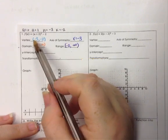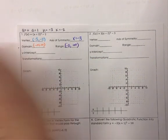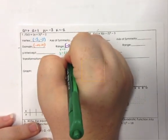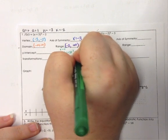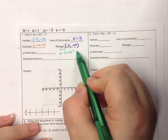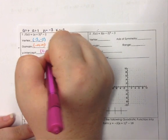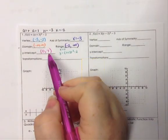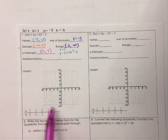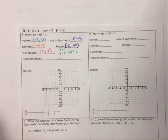The y-intercept is found by plugging 0 into the original function. So x equals 0: y equals (0 plus 3) squared minus 2. Zero plus 3 is 3, squared is 9, minus 2 is 7. So our y-intercept is at (0, 7). This can also be found in a chart if you have x equals 0; if not, make sure you find the y-intercept.